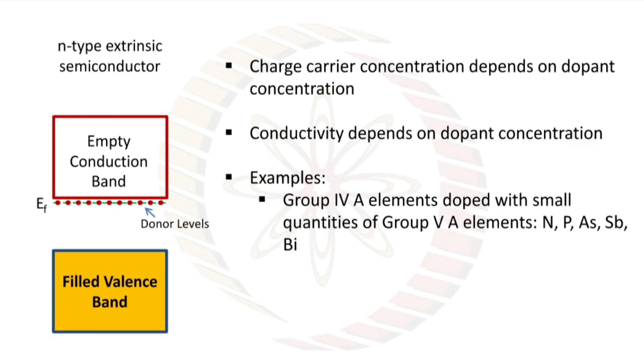For n-type semiconductor, charge carrier concentration depends on dopant concentration, conductivity depends on dopant concentration. Examples are group 4A elements doped with small quantities of group 5A elements, that is nitrogen, phosphorus, arsenic, antimony, and bismuth.